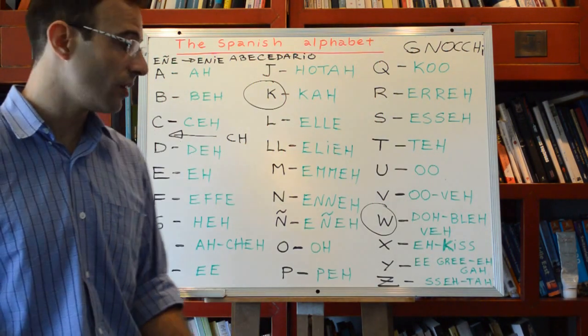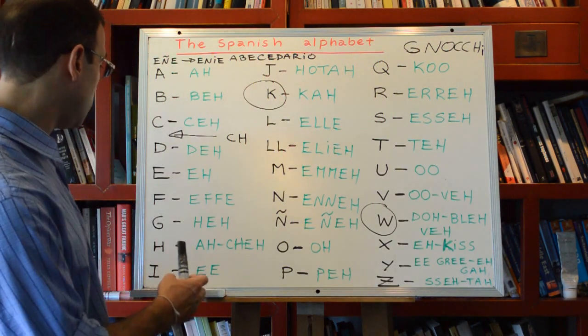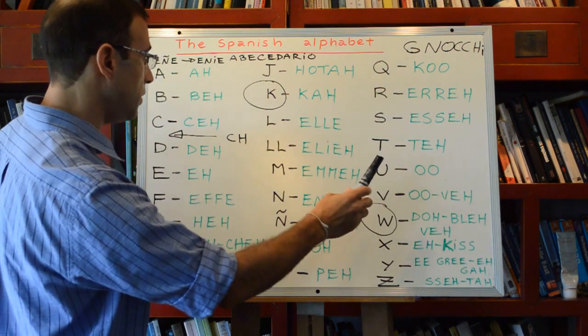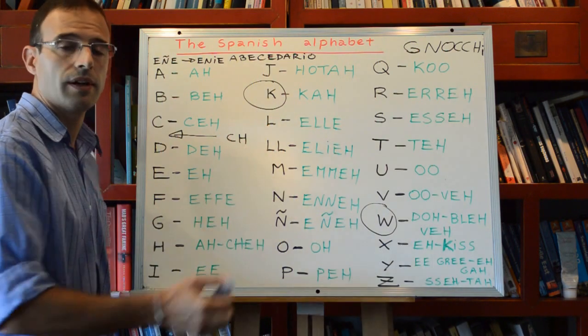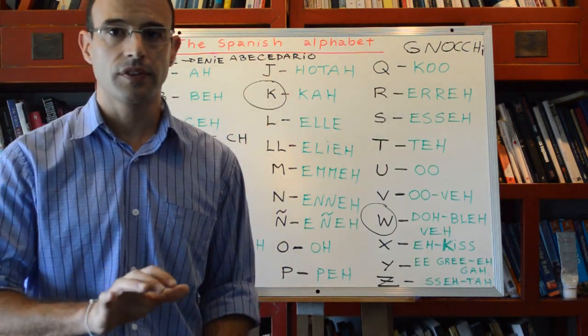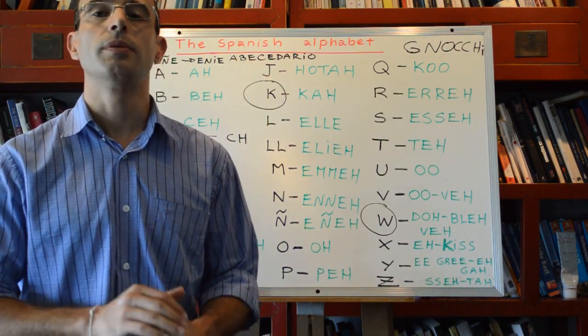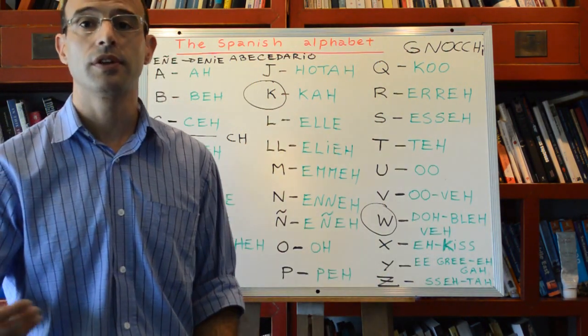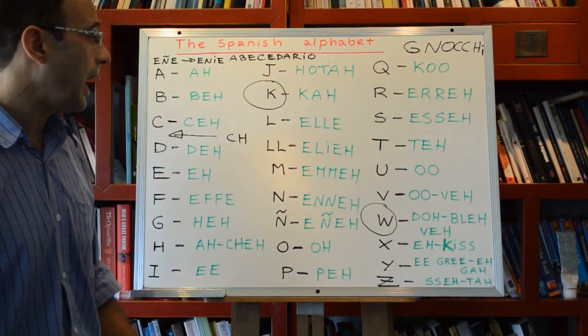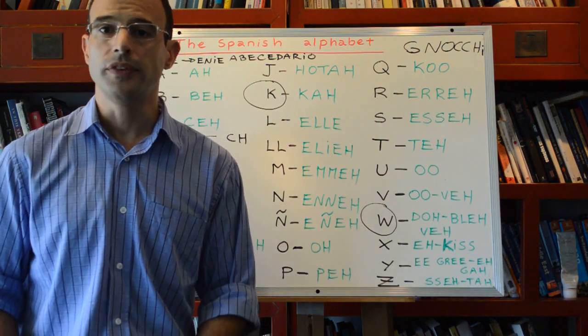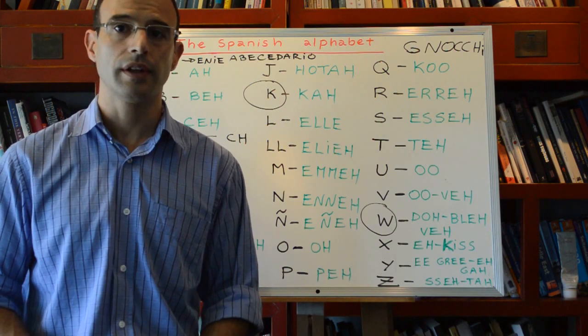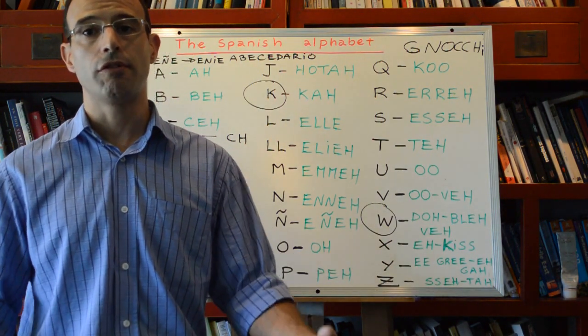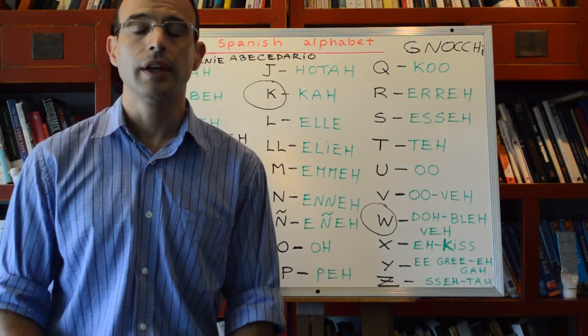So to mark that it's a word that comes from another language, the K has remained in the word instead of using QU. We could Castilianize it using a Q and U replacing K, however there is this will to show that it's a word that comes from a different language.